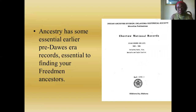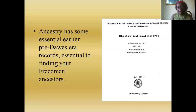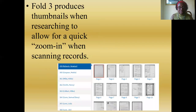Ancestry does have some essential pre-Dawes era records. You'll see records marked CTN — standing for Choctaw Nation — that were once part of the Indian Archives Division of the Oklahoma Historical Society. These records have been on microfilm for decades but have also been digitized. So if you don't live in Oklahoma and can't get to Oklahoma City, you can still look at some of those same images on Ancestry.